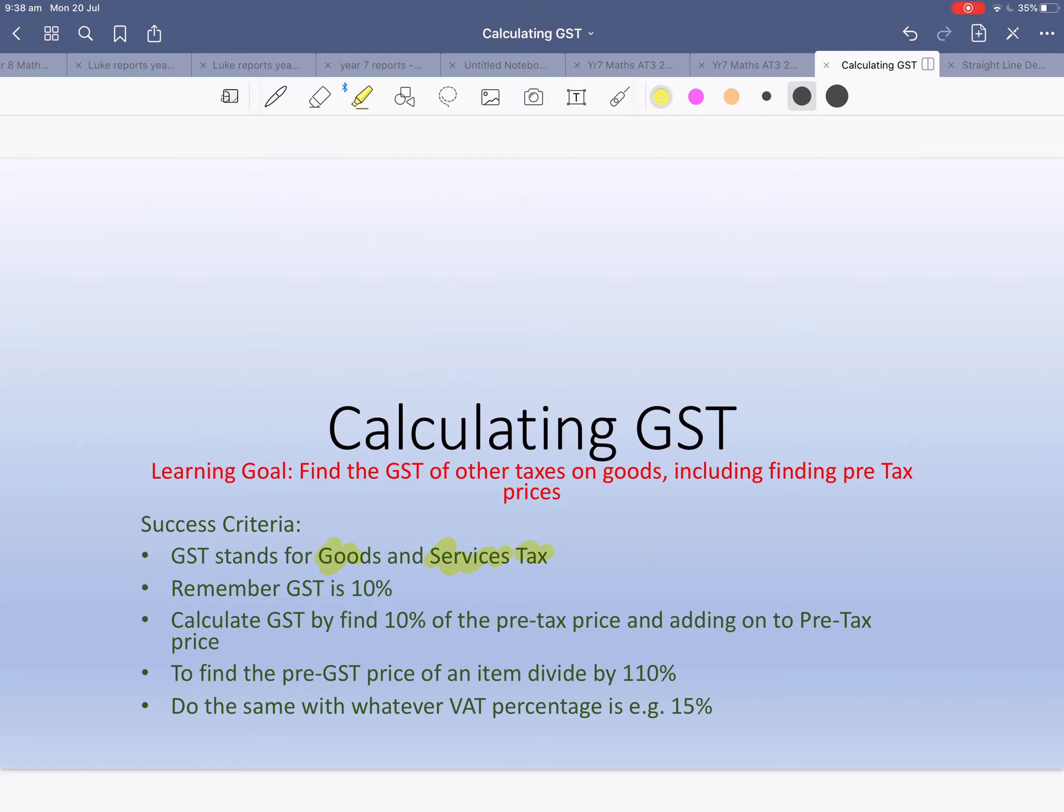When it came in, it was supposed to be on everything, but there are some things in the Australian government that are exempt. For example, fresh food and your school fees are exempt, and recently female sanitary products were made GST exempt. But essentially whatever you buy in Australia, it's 10%.